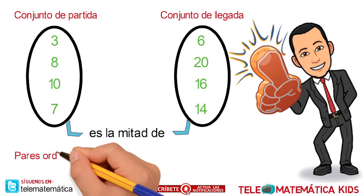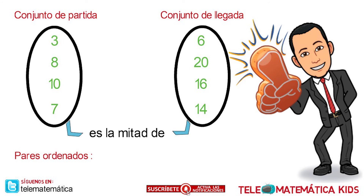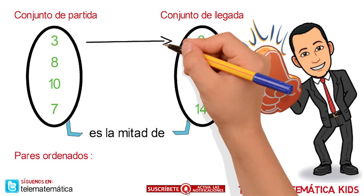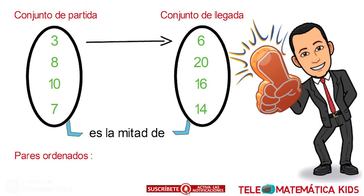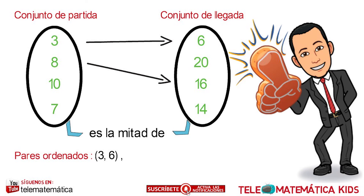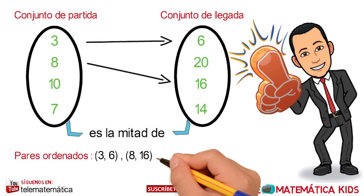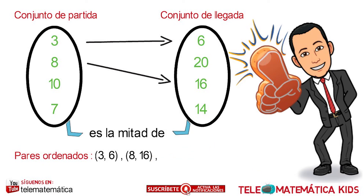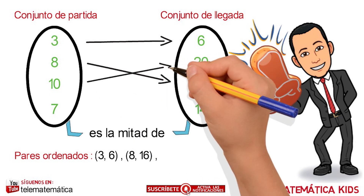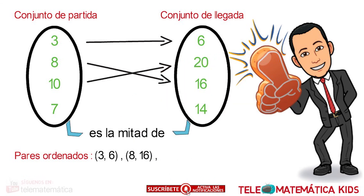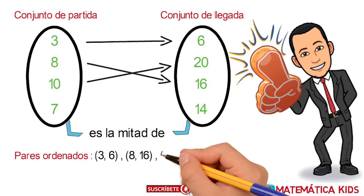Then the ordered pairs are established in the following way. First, the element 3 of the departure set corresponds to the element 6 of the arrival set, so the ordered pair would be (3, 6). The next correspondence is between the element 8 of the departure set and the element 16 of the arrival set, so the ordered pair would be (8, 16). The next correspondence is between the element 10 of the departure set and the element 20 of the arrival set, so the ordered pair would be (10, 20).